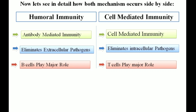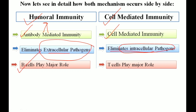In humoral immunity, it is an antibody-mediated immune system where antibodies act against pathogens. In cell-mediated immunity, immune cells come into action. In humoral immunity, extracellular pathogens are removed — that is, pathogens outside the cell — while in cell-mediated immunity, intracellular pathogens are eliminated. The major role in humoral immunity is played by B cells, while T cells play the major role in cell-mediated immunity.